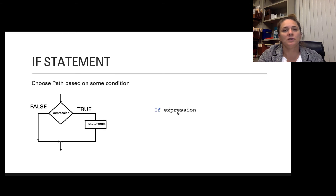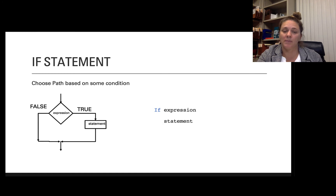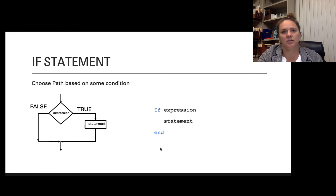If you showed this in code, it would look like this: if expression, statement — and I'm showing indentation here because it just makes it an easier way to read the program — and then end. If it's true, these statements get executed. Otherwise, if this statement is false, it's going to jump to the end and then continue on.